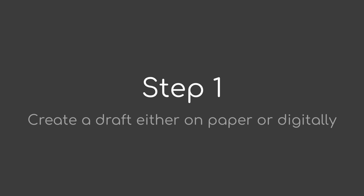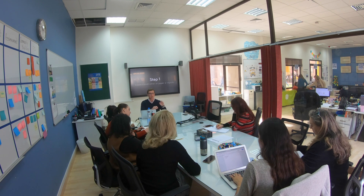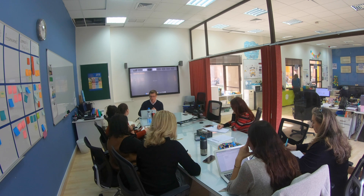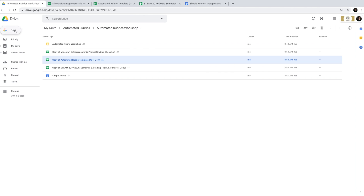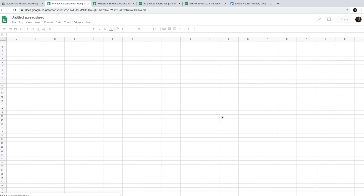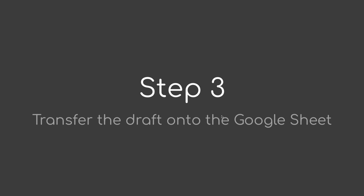My task is to show you how to create these things from scratch — and it's not that hard. Step one: create a draft, either on paper or digitally. Step two: create a new Google Sheet — this is where the automated rubric will live. Step three: transfer the draft onto the Google Sheet. If you did it digitally, copy and paste; if on paper, just populate the sheet.